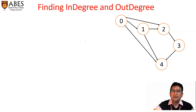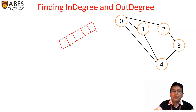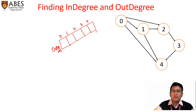Let's take another example to understand indegree and outdegree once again. I will take a vector to represent the indegree and similarly a vector to represent the outdegree. The outdegree array: vertex zero has three emerging edges, so outdegree of zero is three. Vertex one has two emerging edges, so outdegree of one is two.